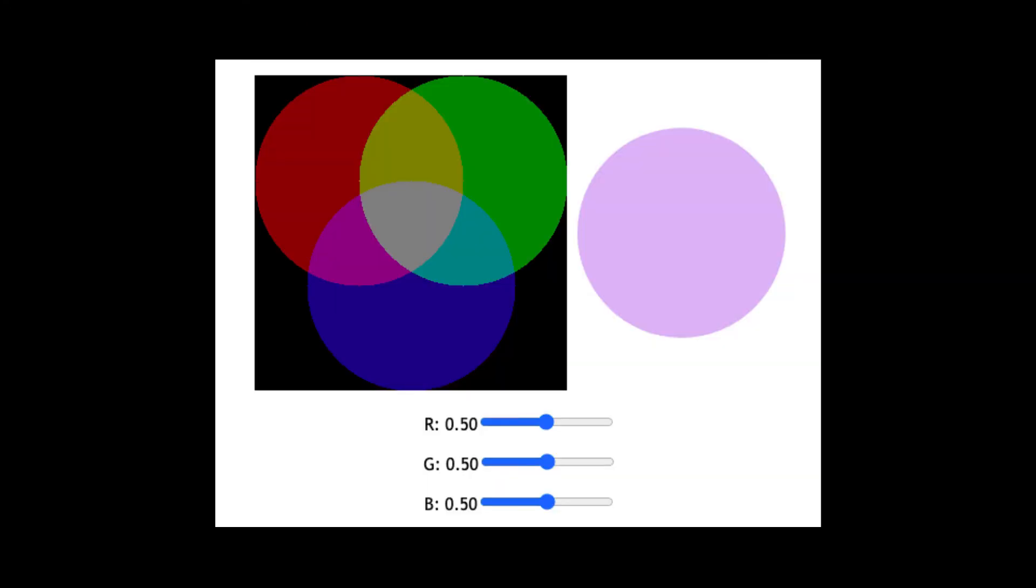All right, so the goal is we're trying to get this color, this kind of lavender, pinkish, purplish, we're trying to use these three colors to mix together to make it.